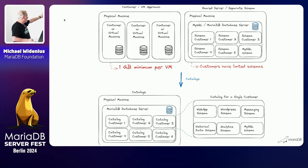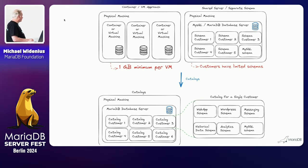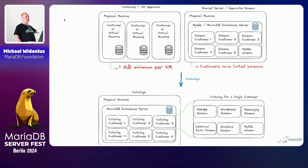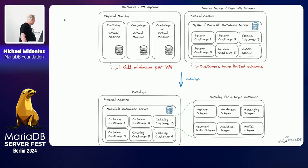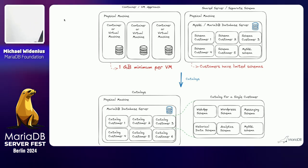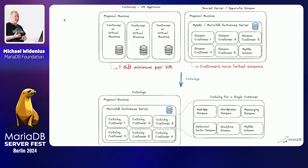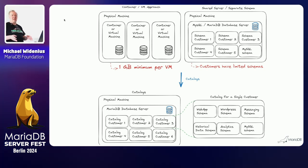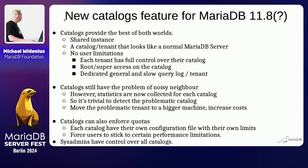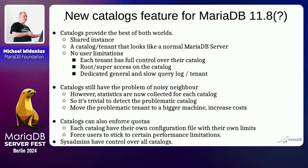This describes the spectrum from virtual machines per tenant down to one schema per tenant. With catalogs we are trying to make things easier. It's the same MariaDB server — you can run it in catalog mode or normal mode. In catalog mode you have one catalog per customer, and inside each customer's catalog you have the same databases and schemas you would have in a standalone MariaDB. Every catalog has their own MySQL user table and any number of databases.